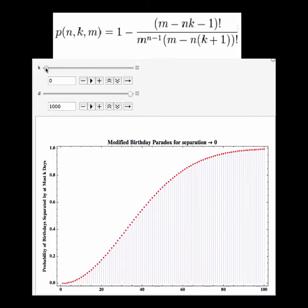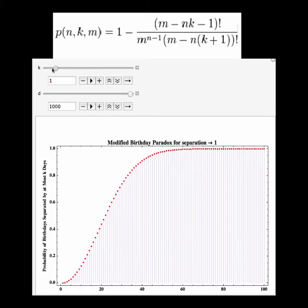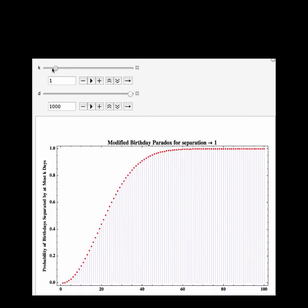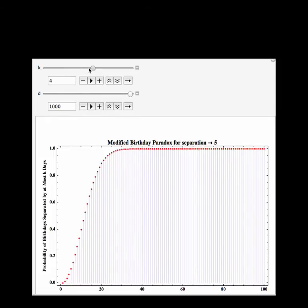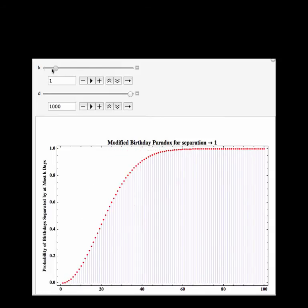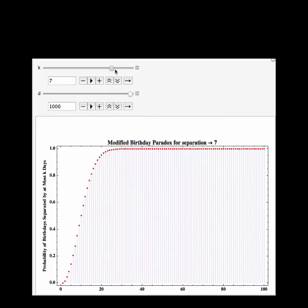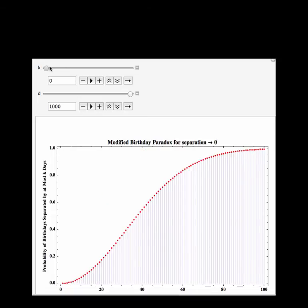So if you set k equal to 0, you see that we have the same equation as our original. Now we're going to increase k, the separation between the days. And we're going to see that the distribution is going to rise overall. The probability of a match is increasing for lower numbers of people in the room.